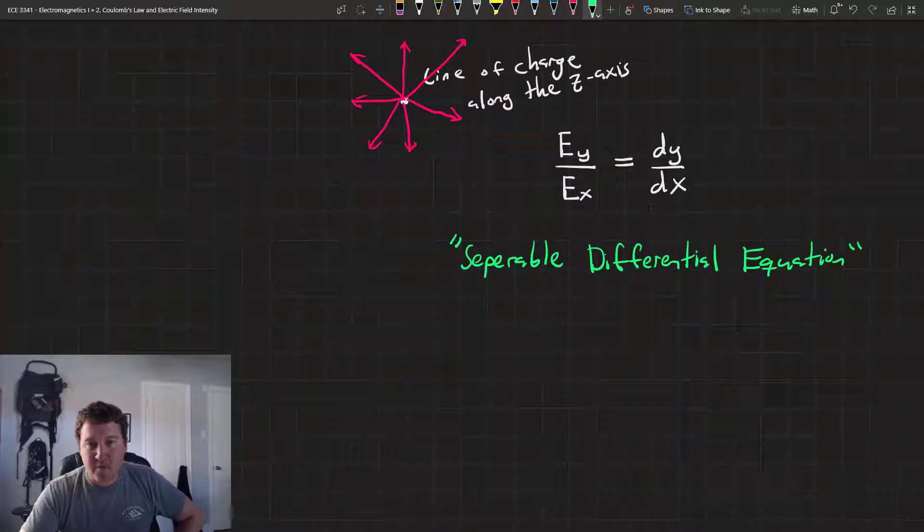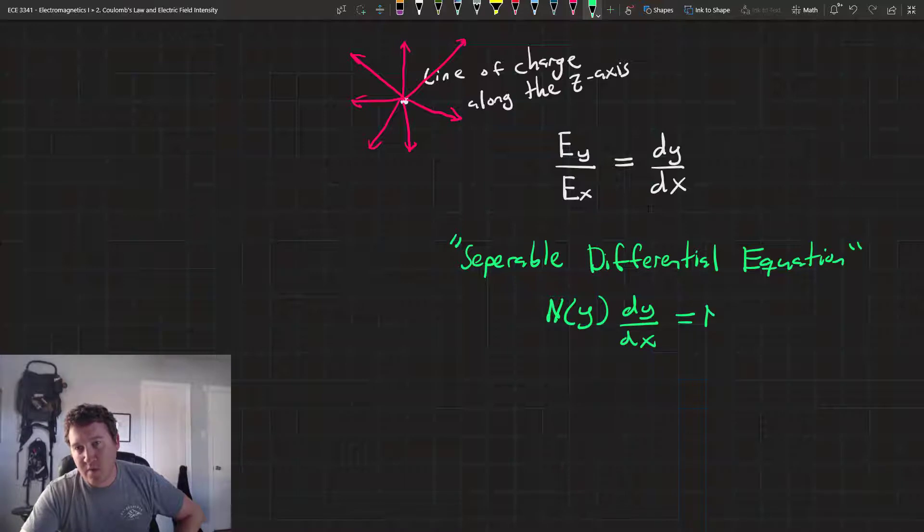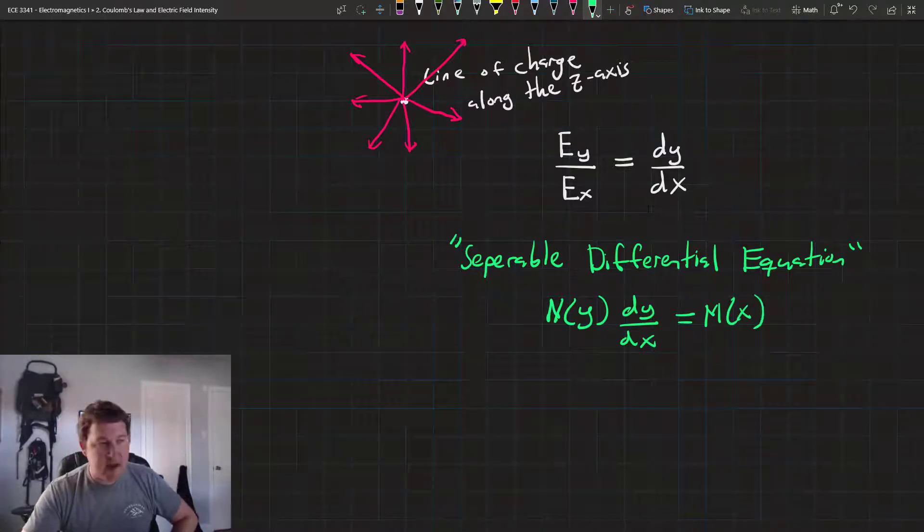Which often have the form, which have the standard form, n of y times dy/dx is equal to m of x.